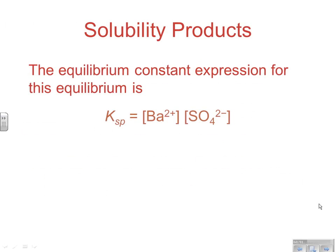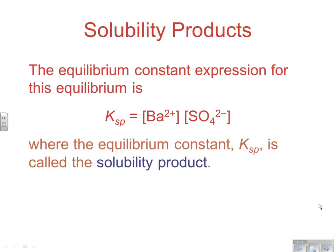The equilibrium constant expression for this equilibrium is known as Ksp. The Ksp for barium sulfate would be the concentration of Ba²⁺ times the concentration of SO₄²⁻. Remember, your reactant was a solid, and solids aren't included in the K expression. Since we're dealing with solubility of a solid, it's known as Ksp, the solubility product constant.